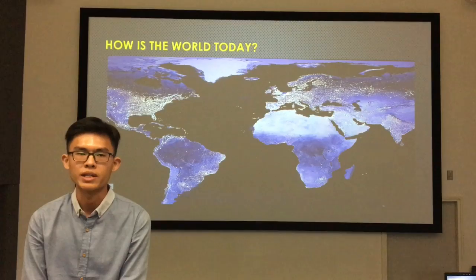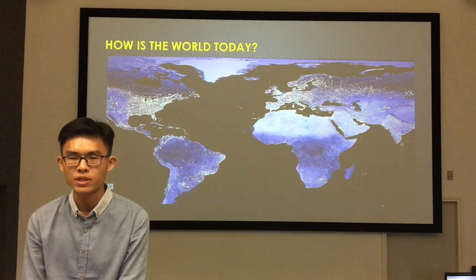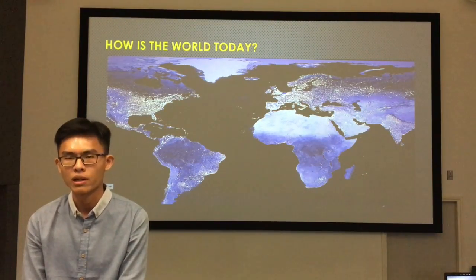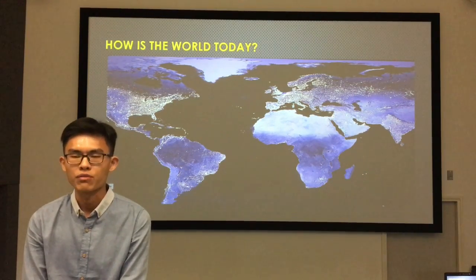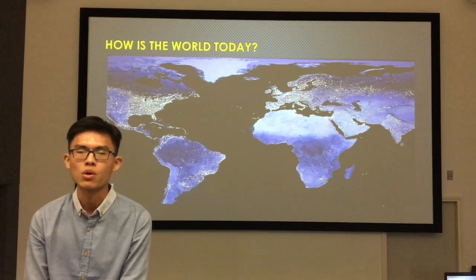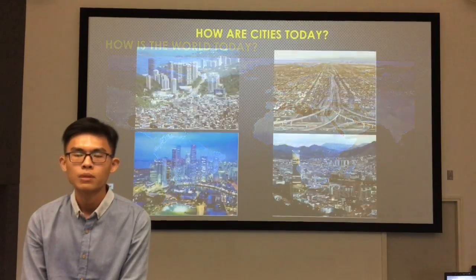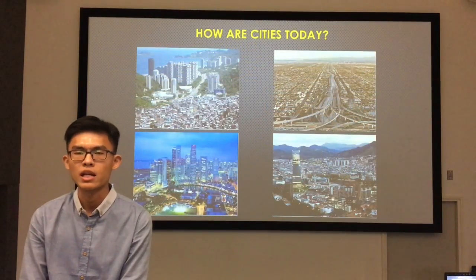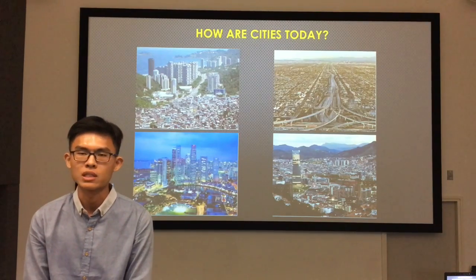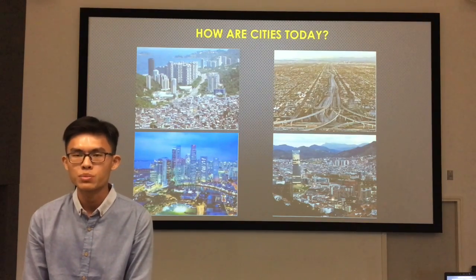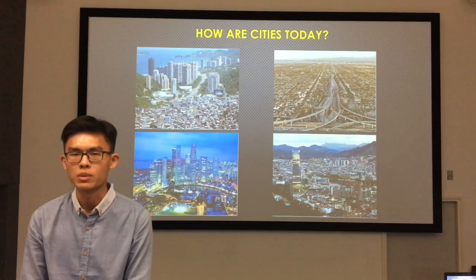How is the world today? As we know, today the world is facing a lot of problems like overcrowding and pollution, and we need sustainable cities to overcome all these problems. How is the city today? As we can see from our pictures, there are a lot of cities which are overcrowded, which means people are facing a lot of problems than before.